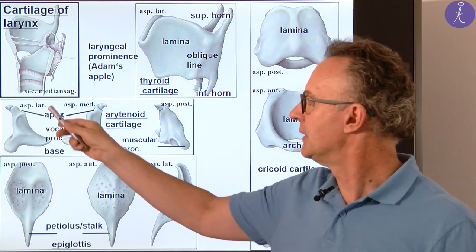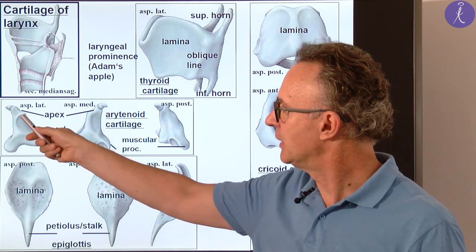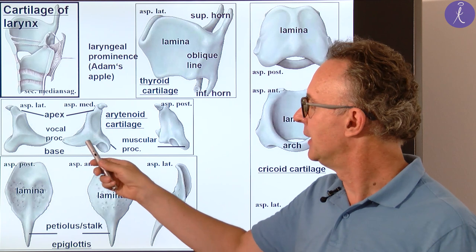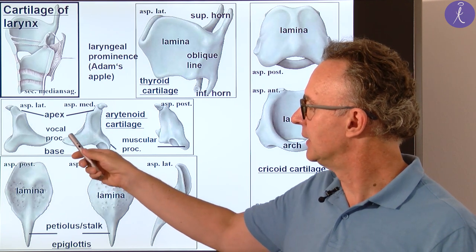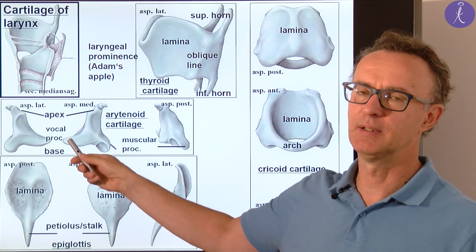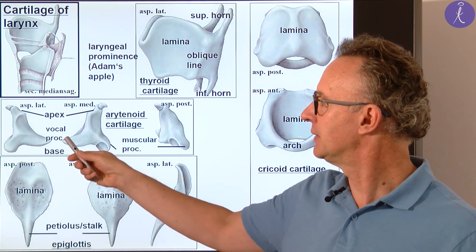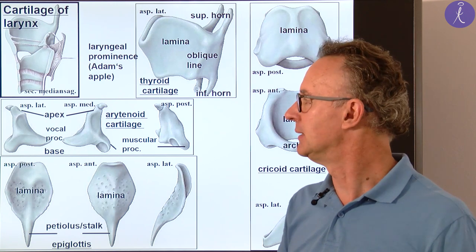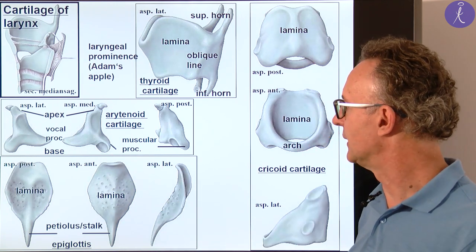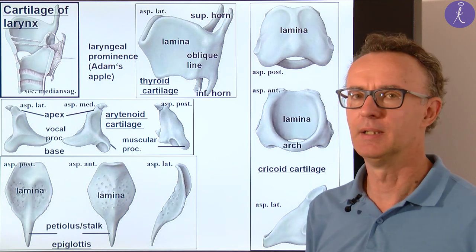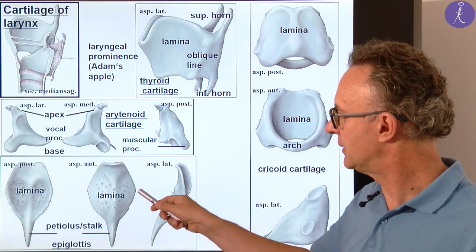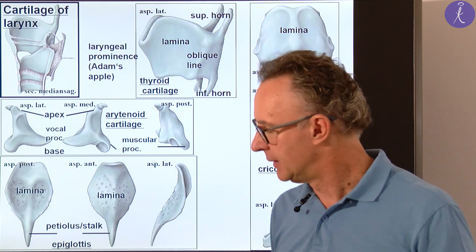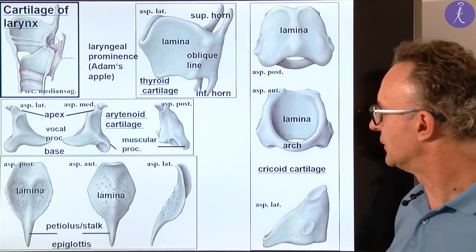The arytenoid cartilage is next. This is a triangle-shaped cartilage having a tip or apex on the top and the larger part called the base at the bottom. It has two processes: one is the vocal process, where the vocal ligament or true vocal fold is attached, and the posterior process is called the muscular process — for muscle insertion, allowing muscles to act on the arytenoid cartilage. At the end we have the epiglottis, having a lamina on the top and the stalk or petiolus below. Again, this is elastic cartilage in contrast to the others which are hyaline.